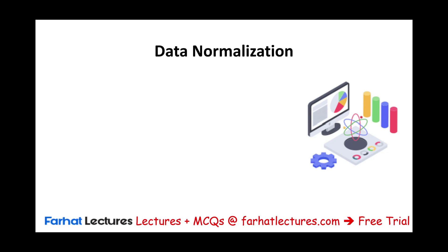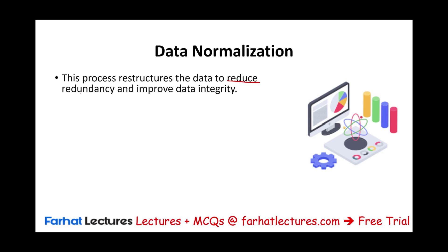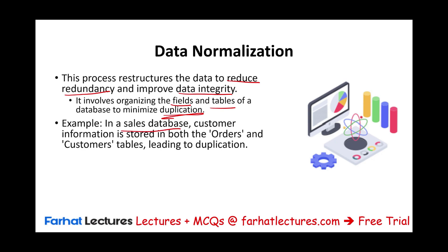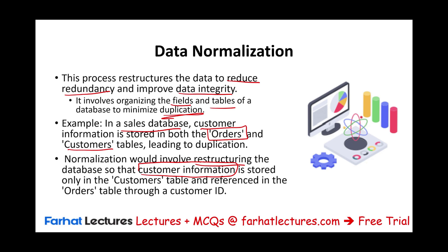We also have to do what's called data normalization. This process restructures the data to reduce redundancies — repeated data in several places — and this improves what we call data integrity. This involves organizing the information into the proper fields and tables to minimize duplication. For example, in a sales database where customer information is stored in both the orders table and a customer table, normalization would involve restructuring so that customer information is stored only in the customer table, then referenced in the order table through the customer ID — the foreign key and primary key. You don't want any duplication.